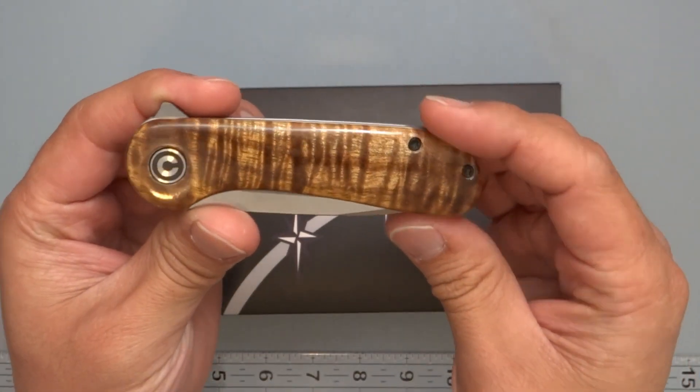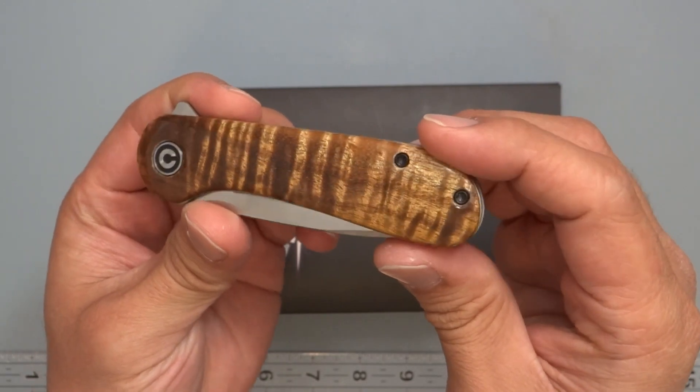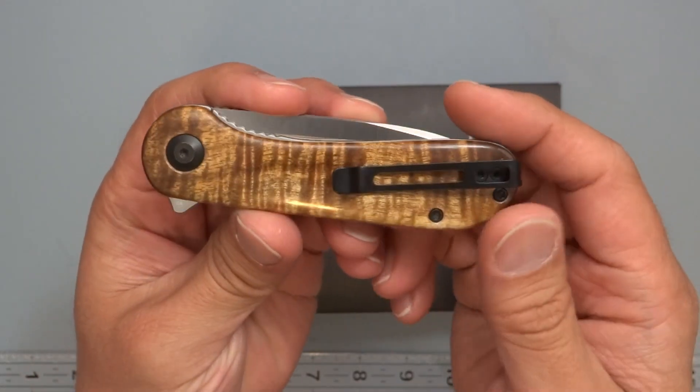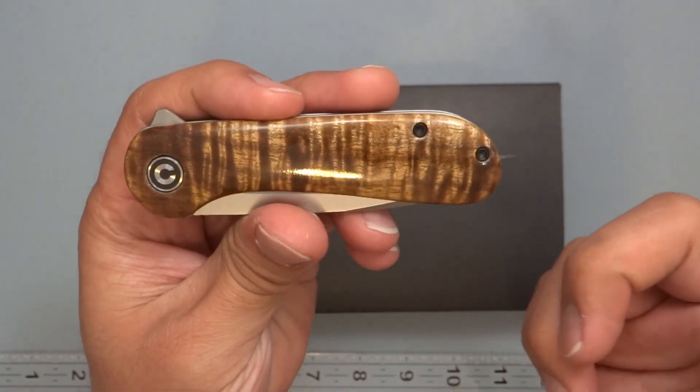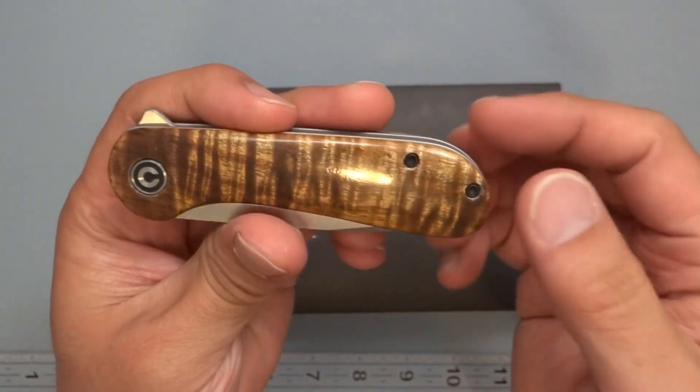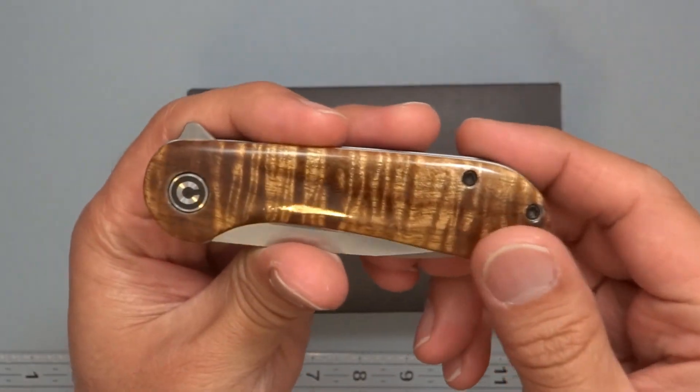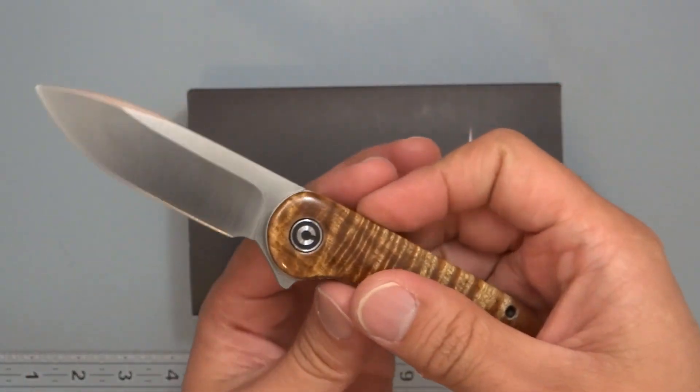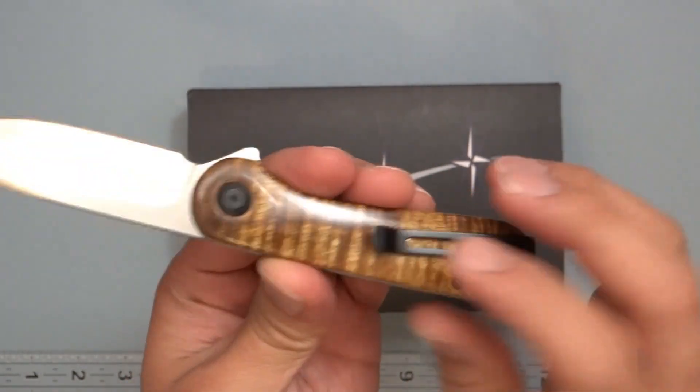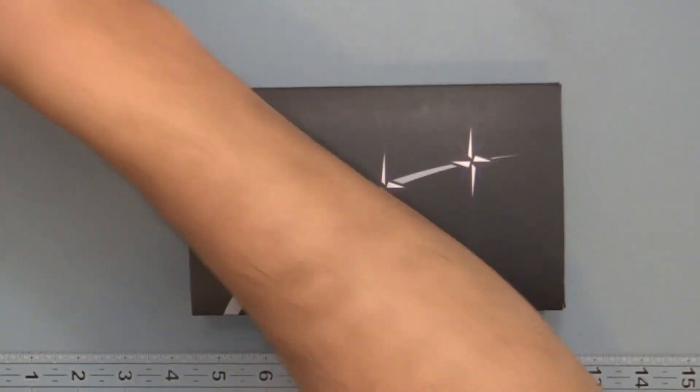So this is from Hawaii Knife and Gear. This is an Elementum, ordered it from him and also deleted the lanyard loop because I don't use lanyard. So he just did the full scale, this is in Koa wood, so it's very pretty, very nice looking. But there's one thing I picked up recently, so that's going to be that.